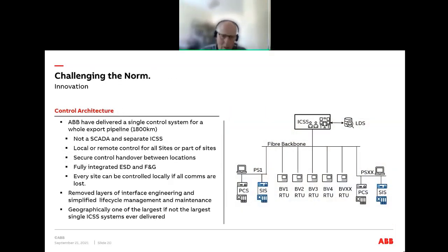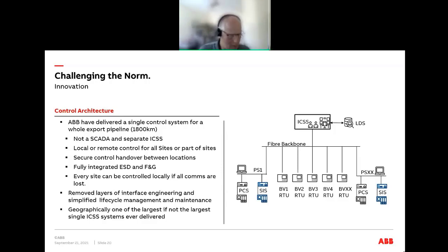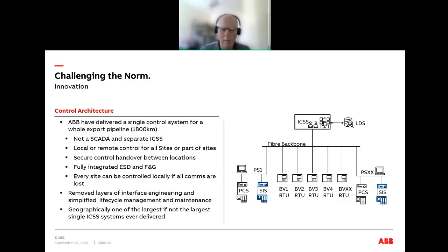Why do all pipelines still use a SCADA on top of separate ICSS systems — PCS, SIS, ESD, fire and gas, and RTUs? With fiber optic communications, that is no longer a requirement, because all control data is available in real time via fiber. Something we've implemented and which is still very applicable: with civil communications, why put in multiple systems? Greatly simplify engineering and lifecycle management by installing one system. This single DCS has a remote control room, a backup control room, and can hand over control to every local entity on the pipeline — so if fiber is cut upstream and downstream, every site is still operable with personnel present.